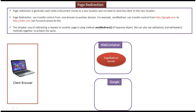For example, transferring control from the Google domain to the NDTV domain is possible using page redirection, but using forward it is not possible. There are two ways to redirect the request: one is using the response object's sendRedirect method, and the other is using the response object's setStatus method and setHeader method together.